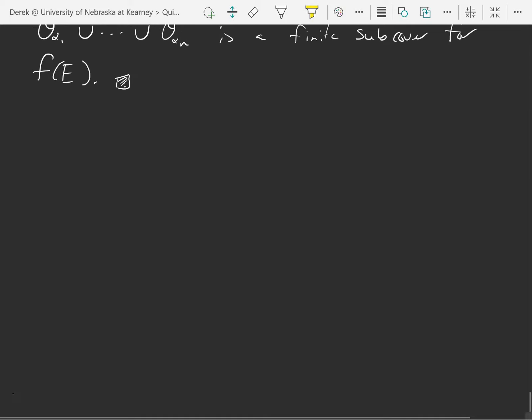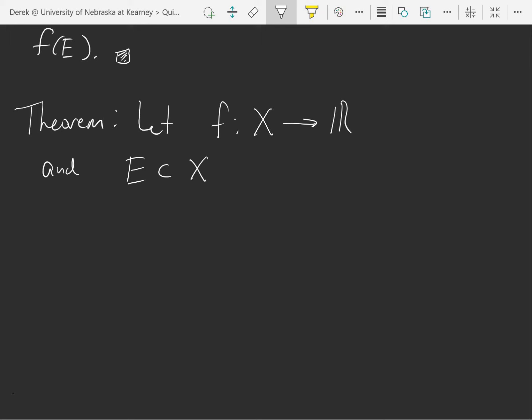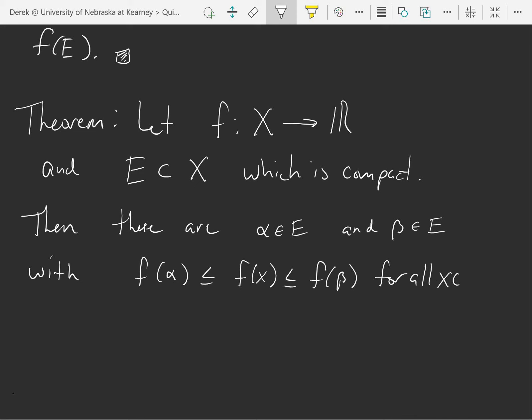What makes that theorem very useful is when we send something that's compact into the reals. So here is kind of a big theorem that's going to be really useful for us. Let f map a metric space to the reals, and e be a subset of x, which is compact. Then there are alpha in e and beta in e with f of alpha less than or equal to f of x less than or equal to f of beta for all x in e.